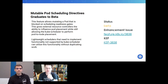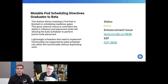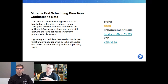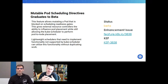Mutable pod scheduling directives is going to beta and will be enabled by default. Before a pod is scheduled, you can mutate the directive, giving external resource controllers the ability to influence pod placement while still offloading the actual scheduling work to the scheduler itself. This allows building lighter-touch scheduler directions without having to implement a full scheduler plug-in.